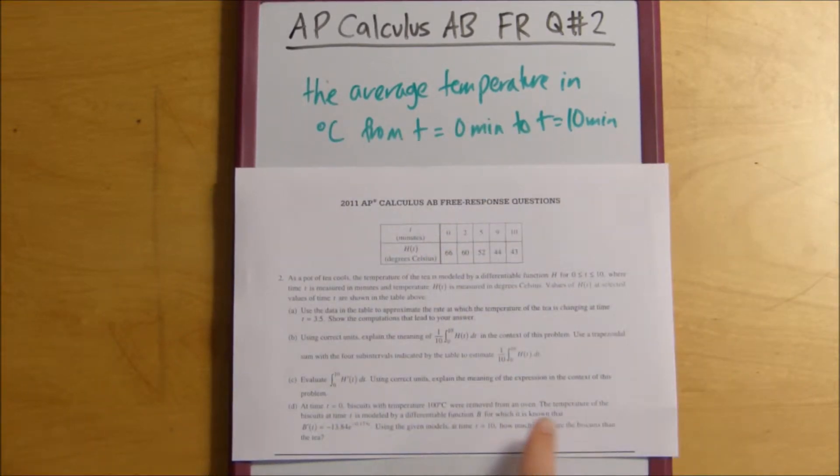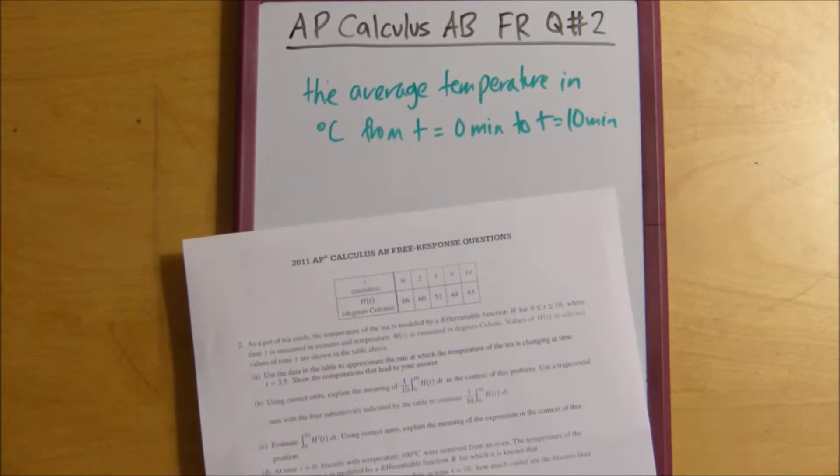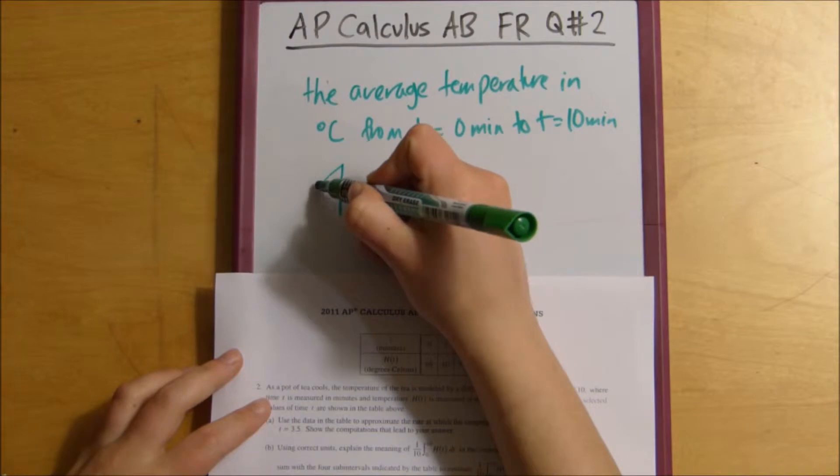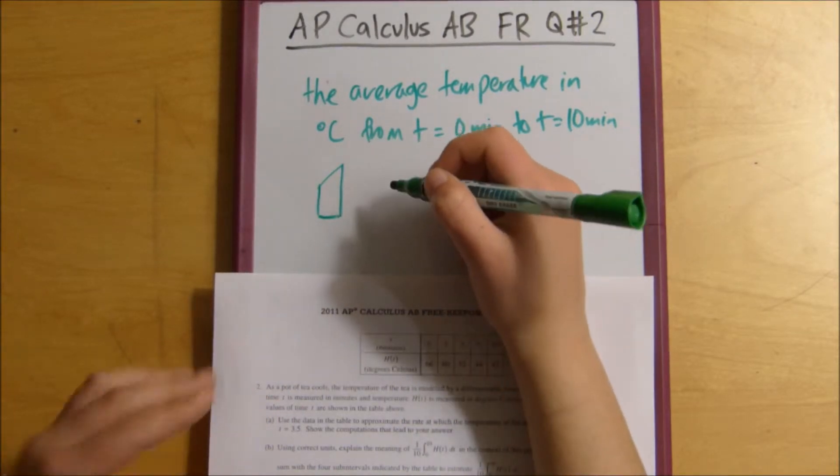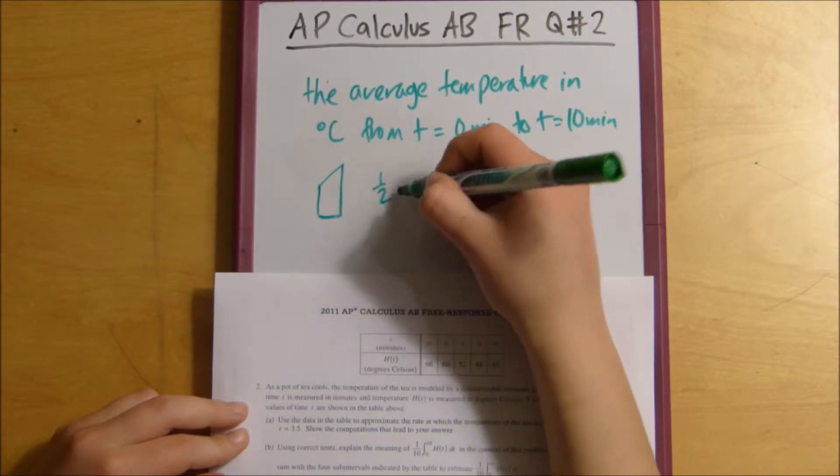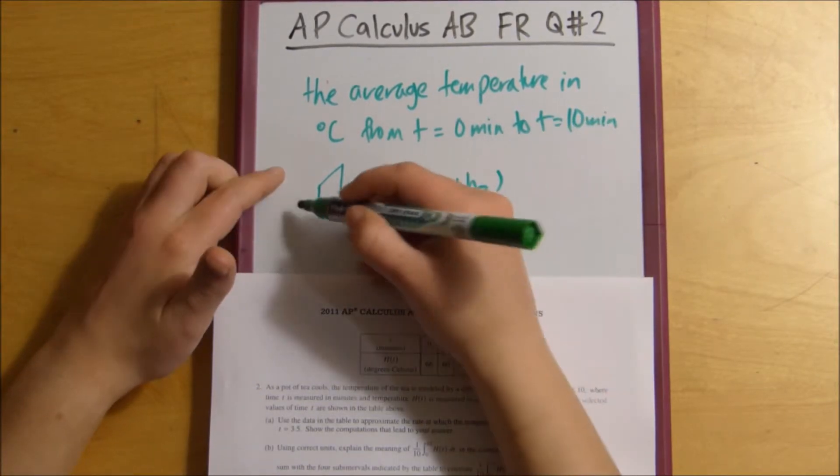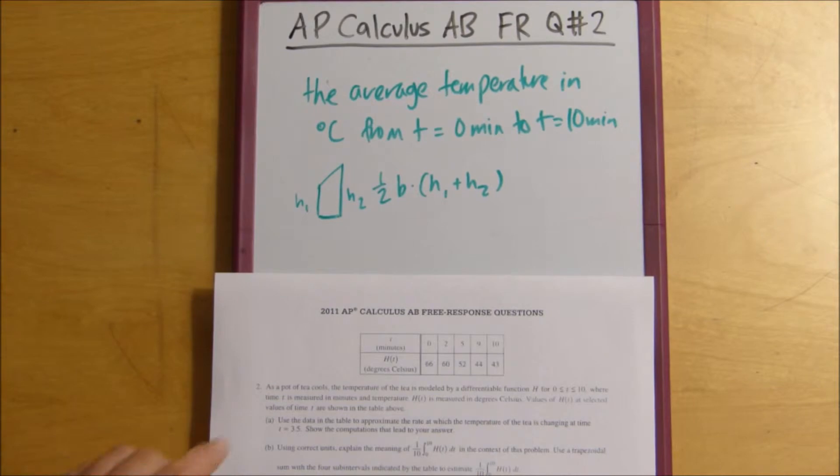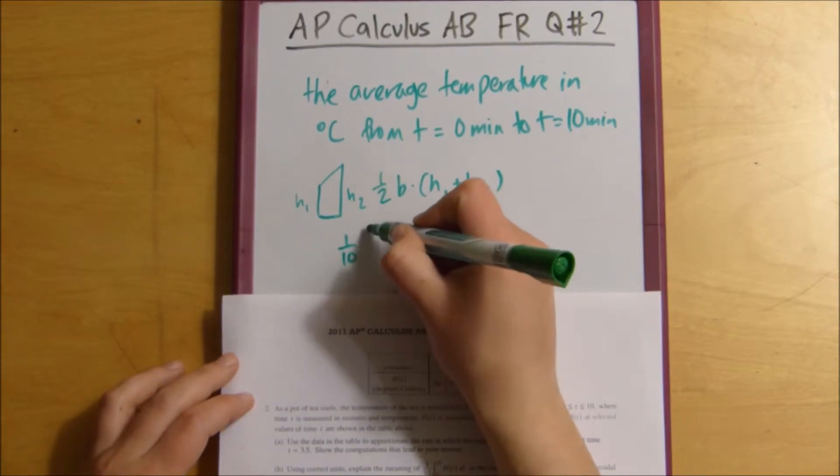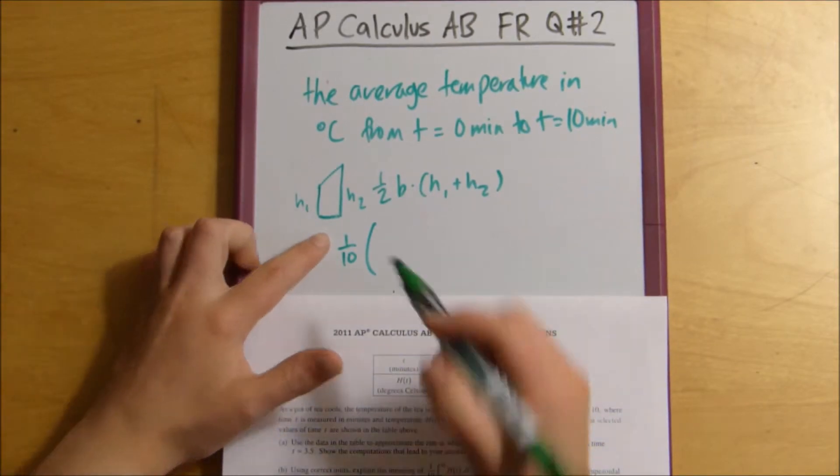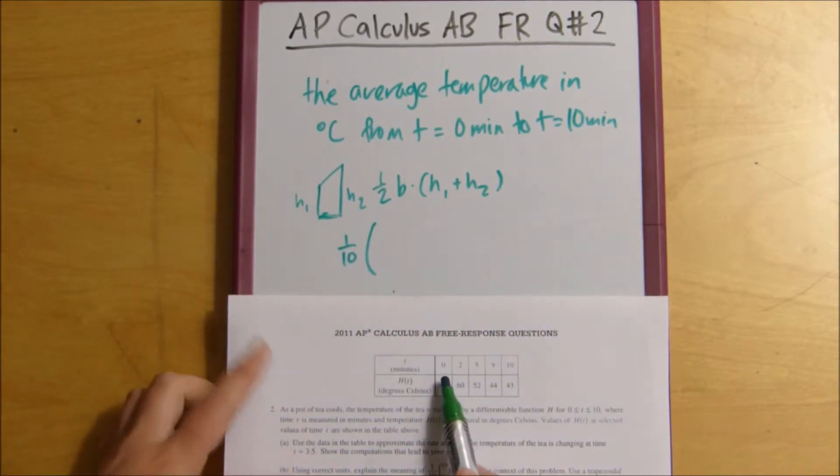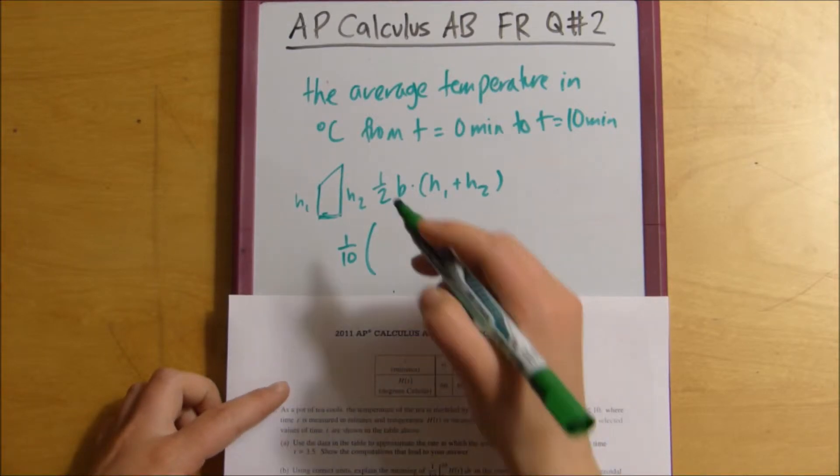And then for the second part of this question, it asks us for a trapezoidal sum with four sub intervals. So, trapezoidal sums, I don't actually memorize any equations. What I just do is I think of a trapezoid, if this was our trapezoid, and I think of the area. It's 1 half base times height 1 plus height 2, where height 1 is this and height 2 is that. So, what we can just do is 1 tenth times—we know that our base would be our change in x. So, from each time this would be a change in x of 2, of 3, of 4, of 1.